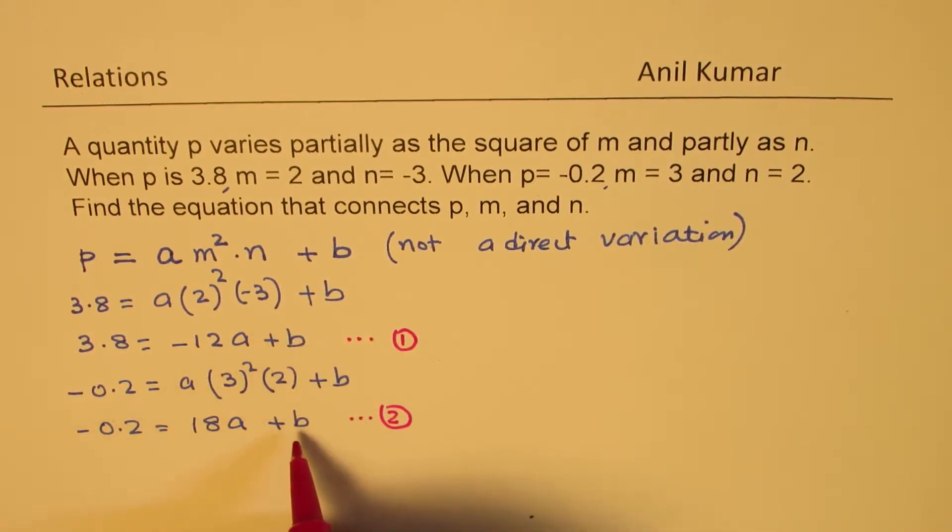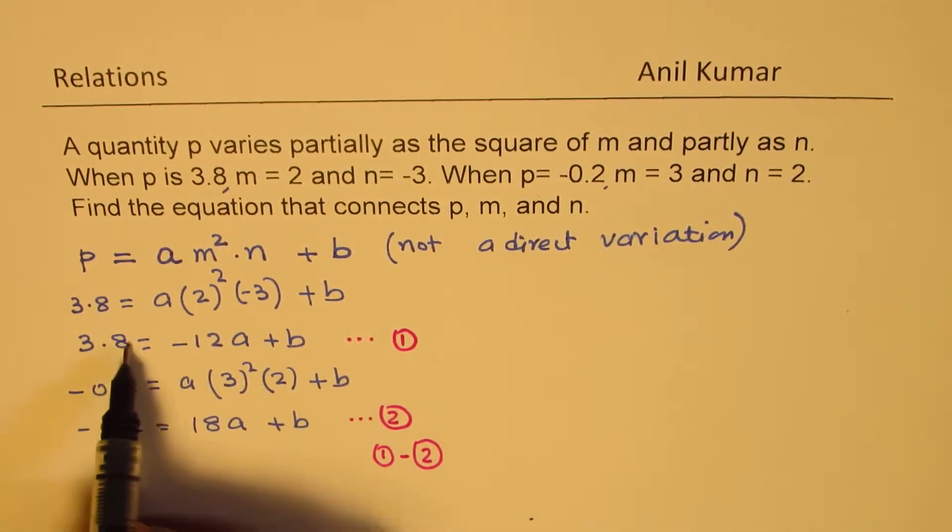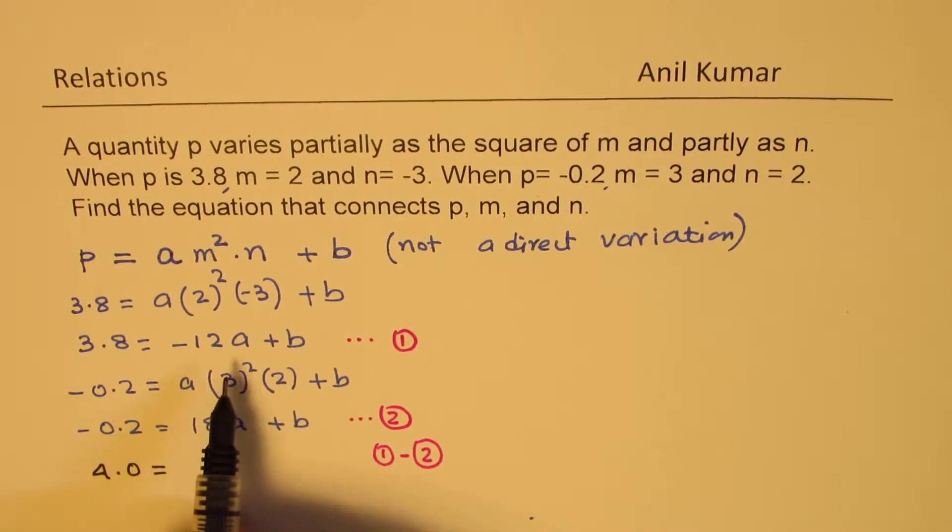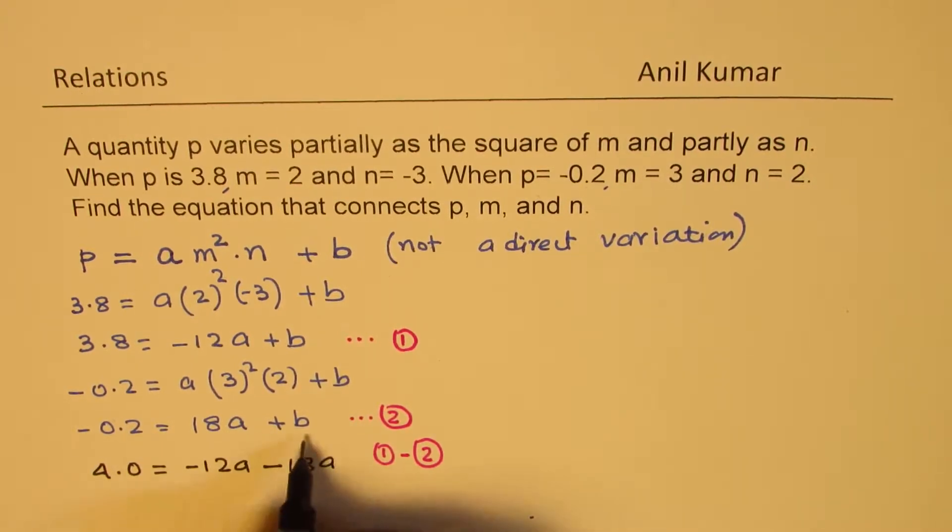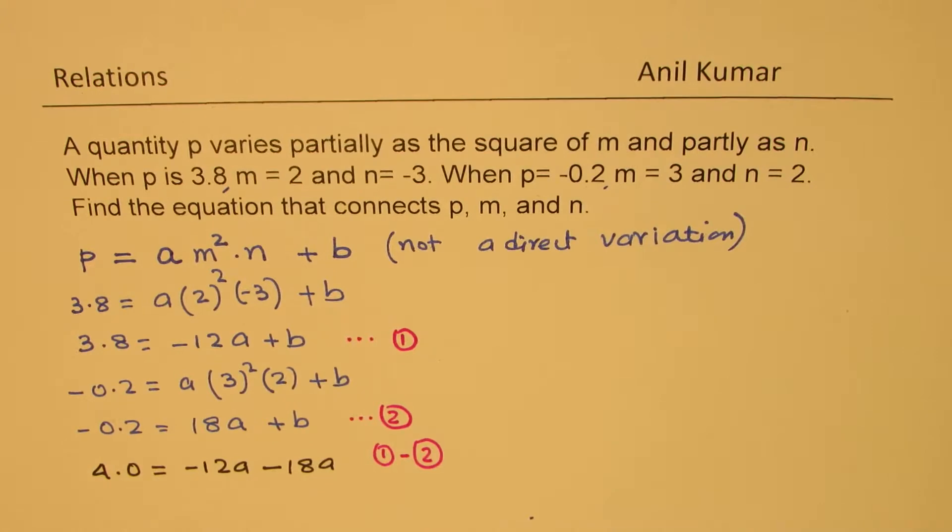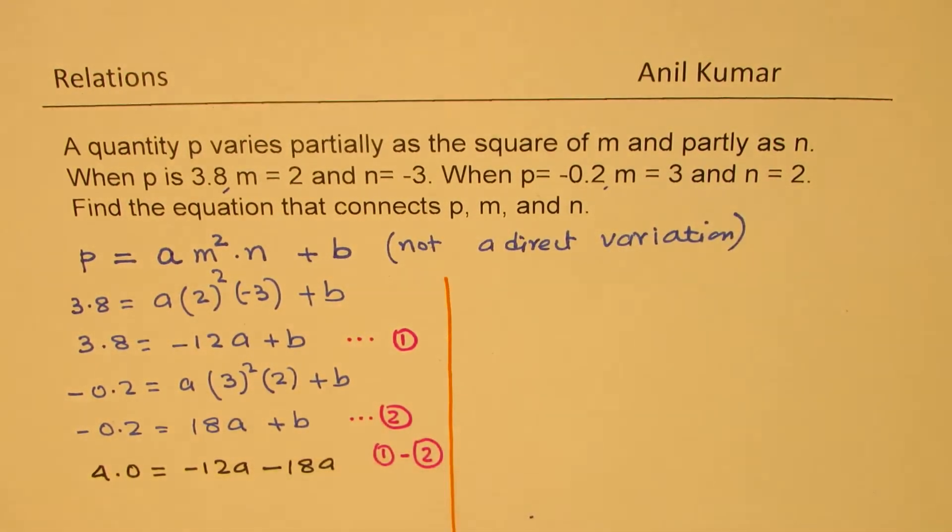So what we will do is, we will get rid of B first by taking away one from the other. So we can do equation 1, take away equation 2. So when you do that, so equation 1, 3.8, take away minus 0.2, it gets added basically, so you get 4.0 equals to, now here we get minus 12A and we get minus 18A, B and B cancel. So this gives you 4.0 equals to minus 12 and 18 is 20, and 10, minus 30A.